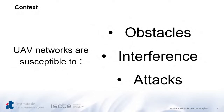UAV networks are susceptible to obstacles, interference, and attacks. Obstacles are related to buildings, trees, and objects, and constructions in the path of the UAV. Interference is related to signals received from other base stations that might decrease the overall power in the communication between the UAV and the base station. Attacks can be divided into physical layer attacks and higher layer attacks. In the physical layer, we have jamming and eavesdroppers. In higher layers, we have intrusion, spoofing, and others.